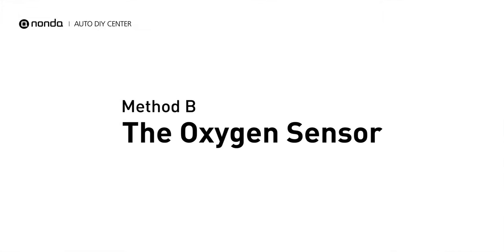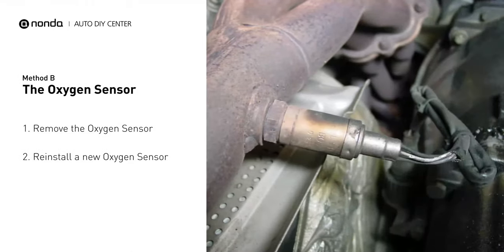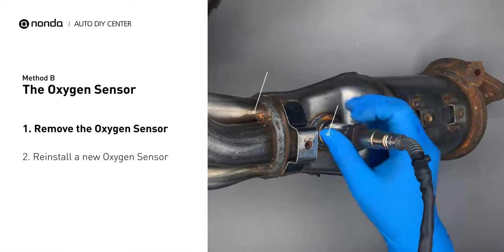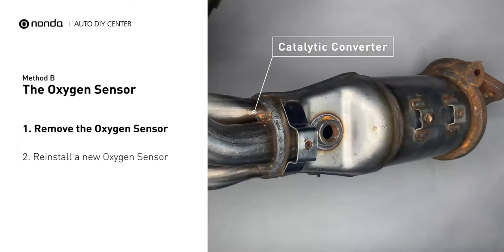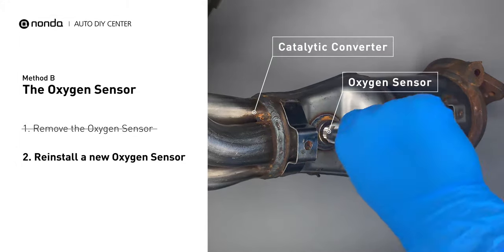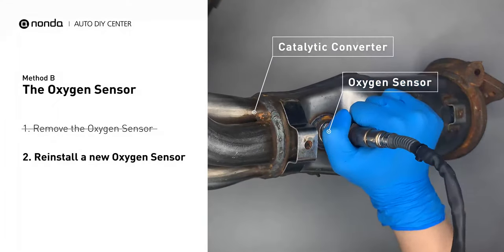Method B: Oxygen sensor. The oxygen sensor is located in the exhaust manifold of the car. Remove the oxygen sensor from the catalytic converter. Reinstall a new oxygen sensor from the original equipment company and put it back on the catalytic converter.